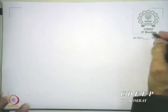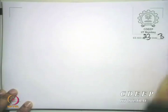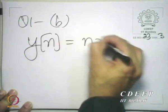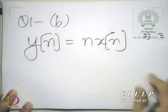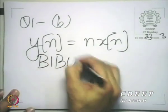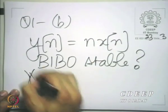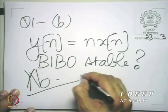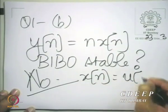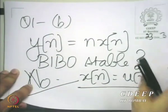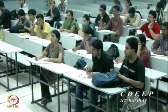Question 1 part b asked whether y[n] = n·x[n] is a bounded-input bounded-output stable system. The answer is no. You could give a counter-example by taking x[n] = u[n], which is bounded, but the output is clearly unbounded. So you have a bounded input with an unbounded output, which serves as a counter-example.